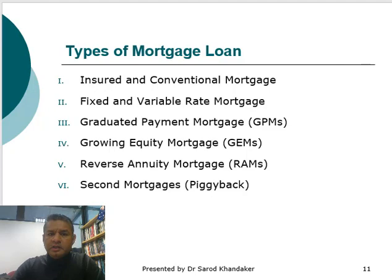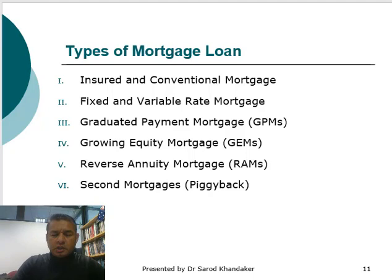The types of mortgage loans we can see in the market include: insured and conventional mortgage, fixed and variable rate mortgage, graduated payment mortgage, growing equity mortgage, reverse annuity mortgage, and second mortgage — also called the piggyback. We will look at each of these mortgage types.